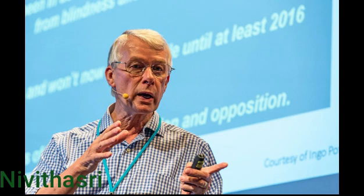Sir Richard John Roberts was born on 6th September 1943 in Derby, England. He is a British biochemist and molecular biologist. In 1972, Sir Roberts started working at Cold Spring Harbor Laboratory in New York. There, he discovered that genes in the cells of higher organisms have a split structure of coding and non-coding sequences. He was awarded the 1993 Nobel Prize in Physiology or Medicine. He is married to Mrs. Jeans and has four children.